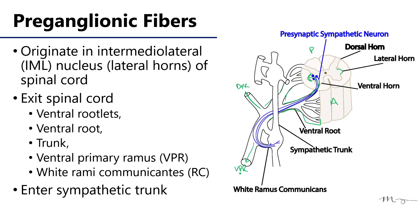From the ventral primary ramus we can see that there are two connections to the sympathetic trunk. The first pathway goes from the IML through the ventral rootlets, through the ventral root, through the trunk, through the ventral primary ramus — and that connection is the white ramus communicants. Those white rami communicants carry the pre-ganglionic fibers into the sympathetic trunk, which is represented here by that ganglion and that fiber.